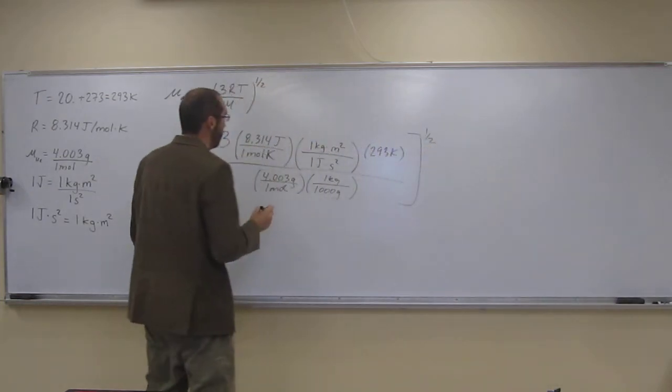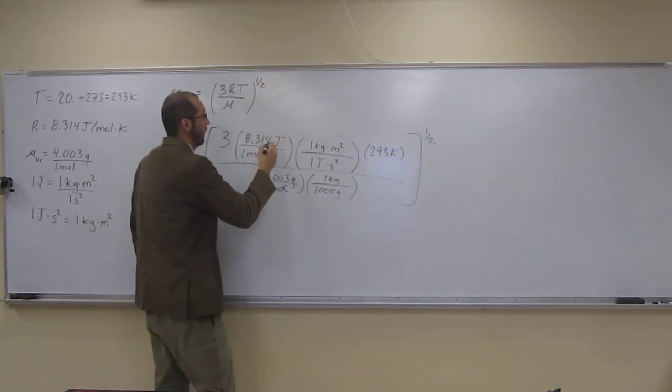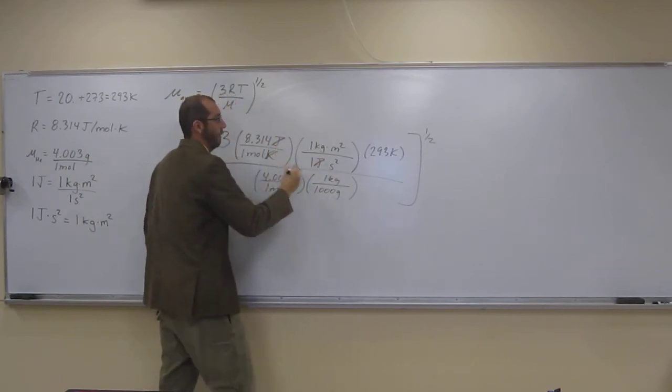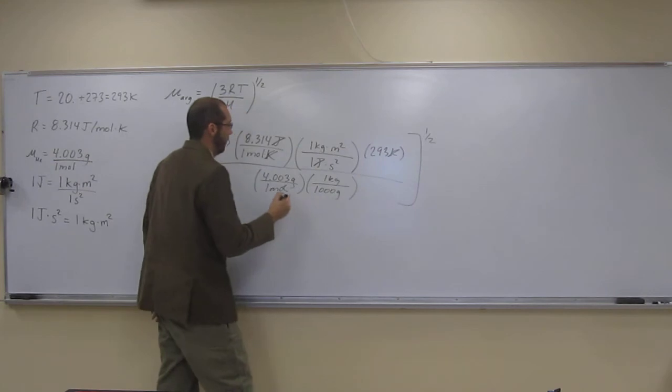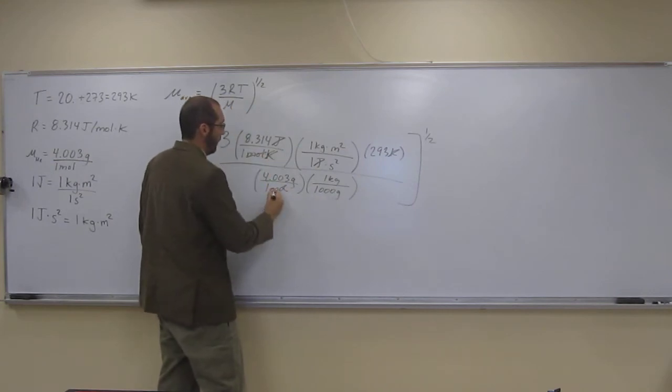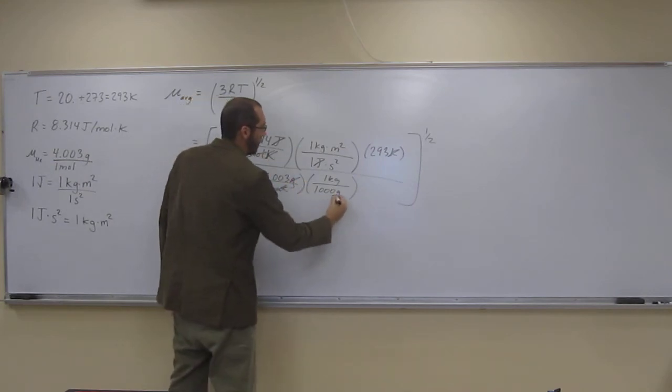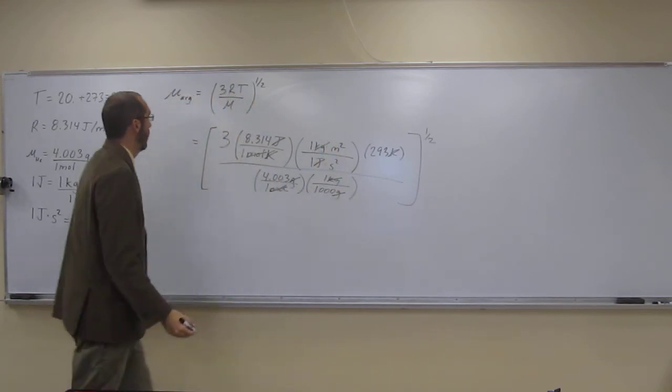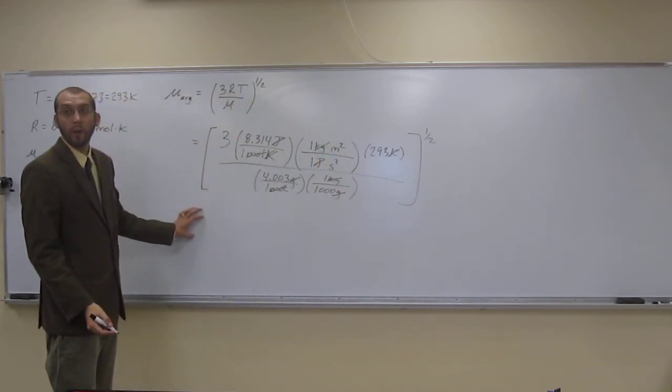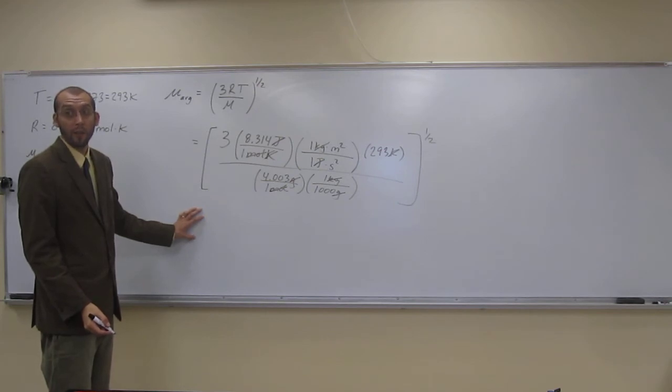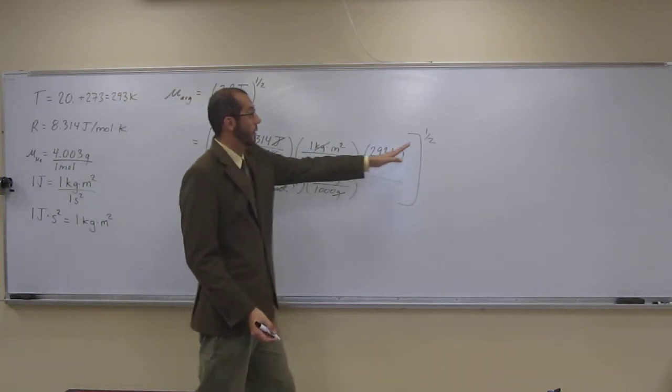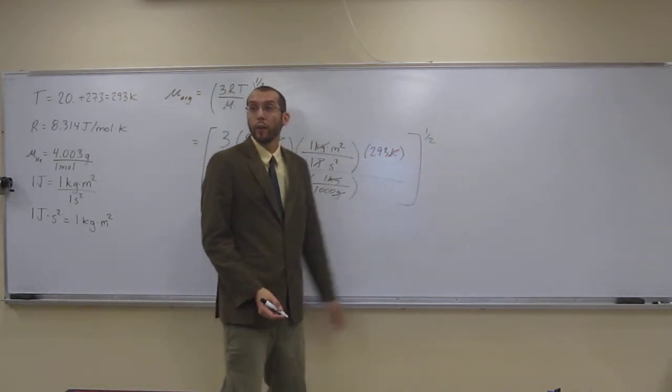So, let's see what we can cancel out here. So, joules cancels with joules, kelvin cancels with kelvin, moles cancels with moles, grams cancels with grams, kilograms cancels with kilograms. And remember, we're looking for average velocity, right? So, meters per second is a good unit, and that's what we got. Meters squared per second squared, and then we're going to take the square root of that.